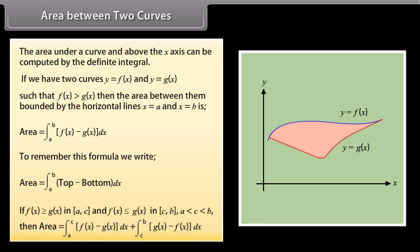If f(x) ≥ g(x) in [A, C] and f(x) ≤ g(x) in [C, B], where A < C < B, then area = ∫ from A to C of [f(x) − g(x)] dx + ∫ from C to B of [g(x) − f(x)] dx.